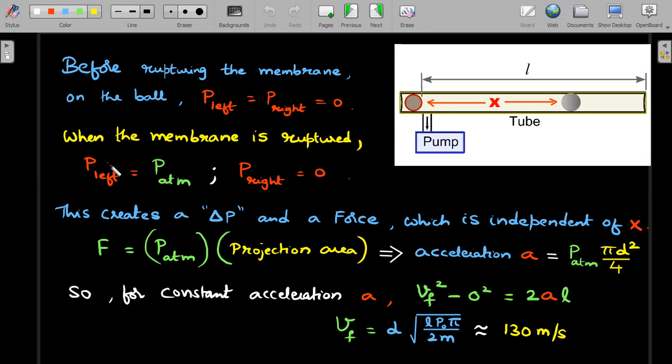So once the membrane is ruptured, as you could see on the left of your screen, P left is P atmosphere, P right is still zero. So this creates the delta P and a force which is independent of X. So even the ball has moved or the bullet has moved here, this all entire of it is filled with atmospheric pressure of air. And therefore, the force is constant.